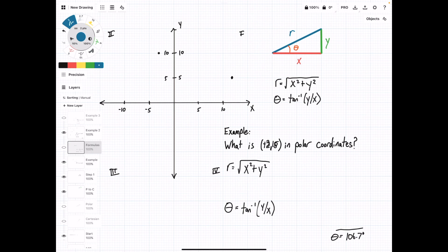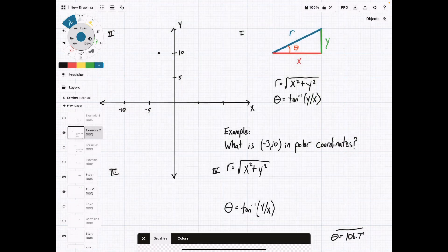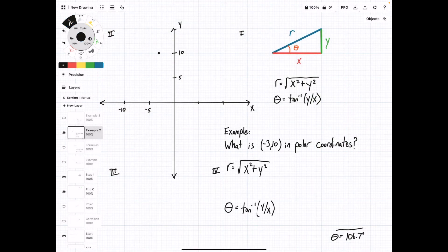That's pretty straightforward. We do another problem here. We have (-3, 10), and we want to figure out what its polar coordinates are. So again, the steps are going to be mostly the same.